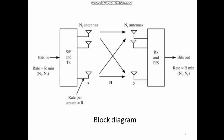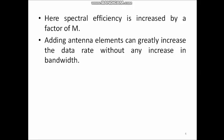Here, capital H refers to the channel matrix and its dimension is n_r × n_t. The overall data rate is given by the equation R × minimum(n_t, n_r), where R is the rate per individual stream. In spatial multiplexing, spectral efficiency is increased by a factor of M, where M equals n_t, by using multiple antennas. Adding antenna elements can greatly increase the data rate without any increase in bandwidth — just by increasing the total number of antenna elements, we can increase the data rate.